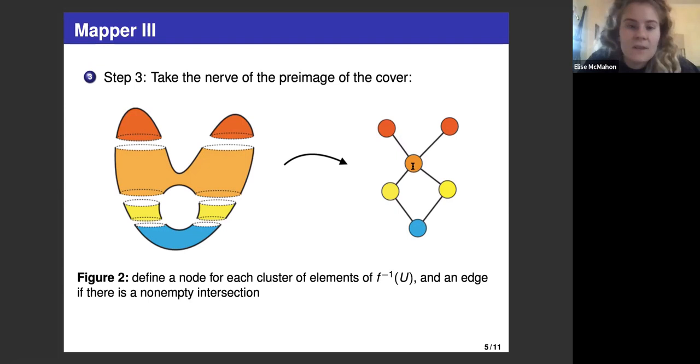This other red blob gives the other red node. And then this orange blob, because it's all kind of one piece, gives a single node. And then because we have these overlaps, we get edges. But note that we don't have overlaps between any of the same colors, so we don't have any edges connecting the same colors.